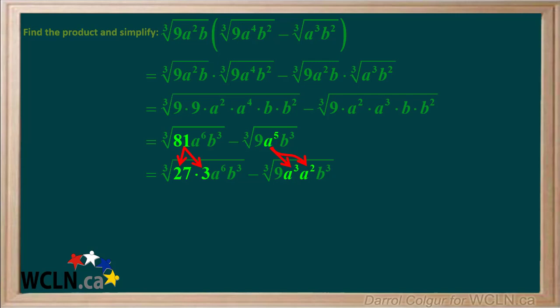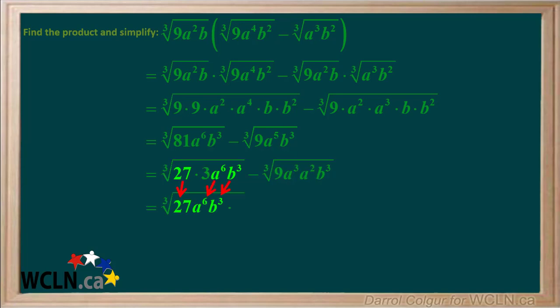We'll factor 81 to 27 times 3, and a to the 5th to a to the 3rd times a squared. Note that 27 and a cubed are both perfect cubes. Looking at the first term, we'll group the perfect cubes — 27, a to the 6th, and b cubed — on the left side, and the leftover 3 on the right side of this radical.